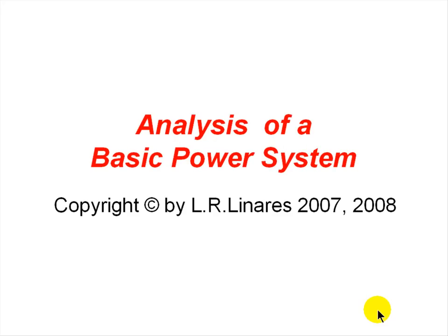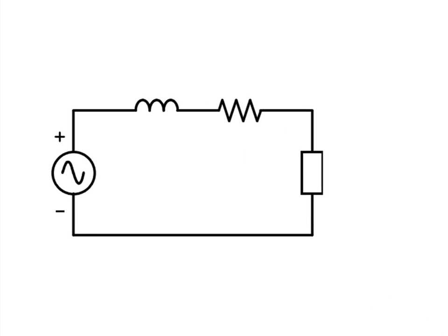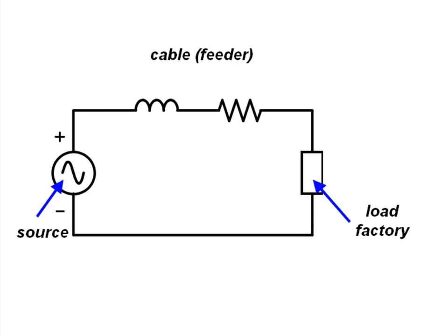This lecture is about the analysis of a fundamental electric power system. Here is the most simple possible electric power system — basic and fundamental. A source feeds a load through a cable or feeder described by its resistance R and by its inductive reactance X. The voltage at the source is Vs, and the voltage at the load is Vf. The current common in the circuit is I.